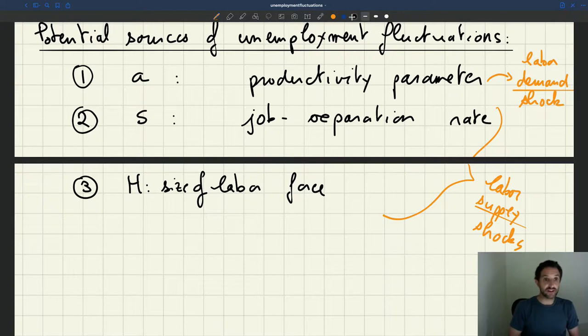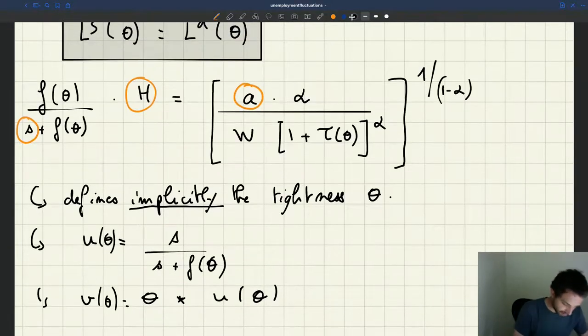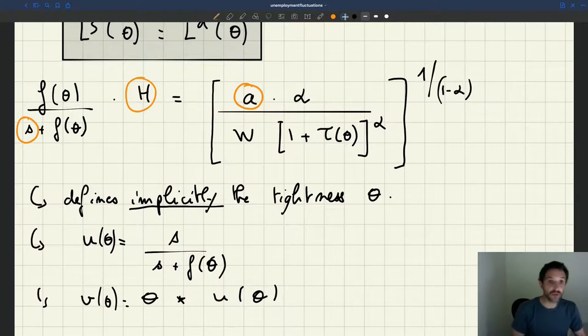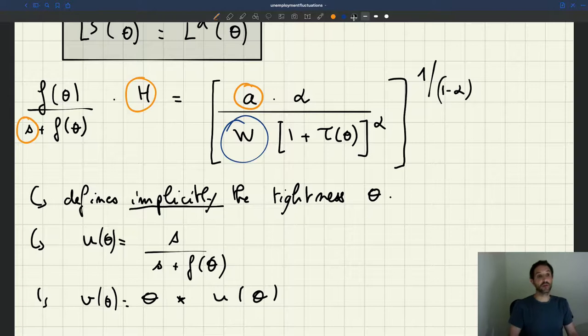Now, before we do any of this, we have to realize that there's something that's a little bit lacking in what we've done so far, so let's go back to our equation. The key thing we haven't talked much about is what happens to the wage here. And it turns out that what happens to our wage is going to be really fundamental to understanding what happens in the labor market over the business cycle.